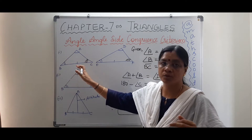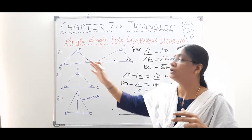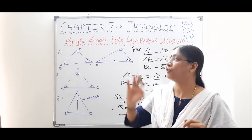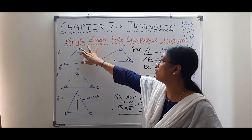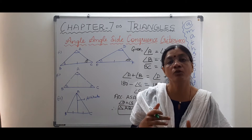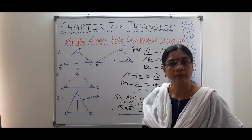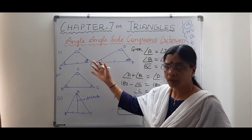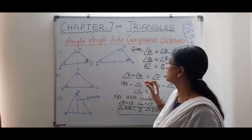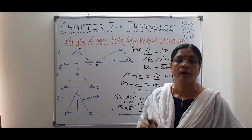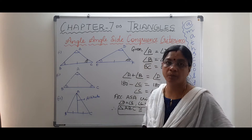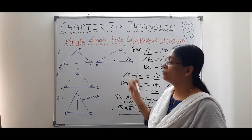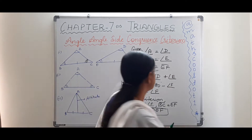We conclude that even when two angles and the side not enclosed within them — some other side — are given to be equal, the triangles are congruent. This is the Angle-Angle-Side criterion: two angles and one side elsewhere (not enclosed within those two angles) being equal is sufficient for congruence. This is the first theorem in AAS congruence criteria.